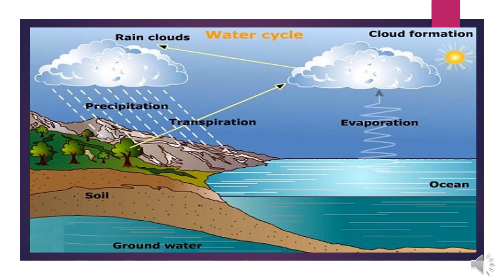Here we have shown the water cycle, where evaporation and transpiration play a very important role in cloud formation, rain clouds, and precipitation or rainfall. So these are the crucial factors for rainfall in any region.